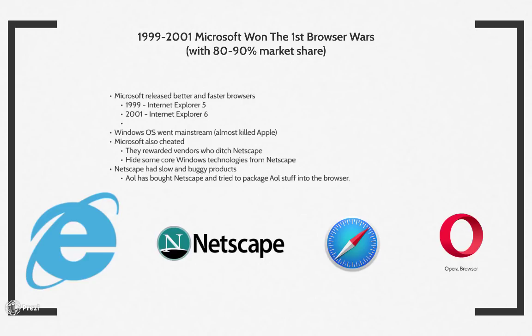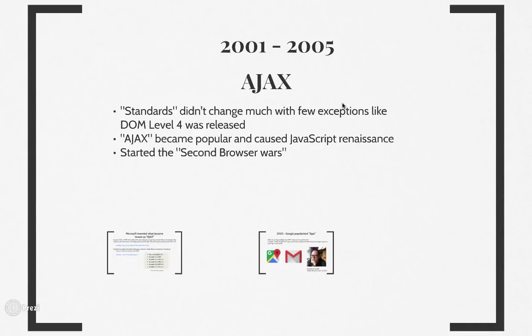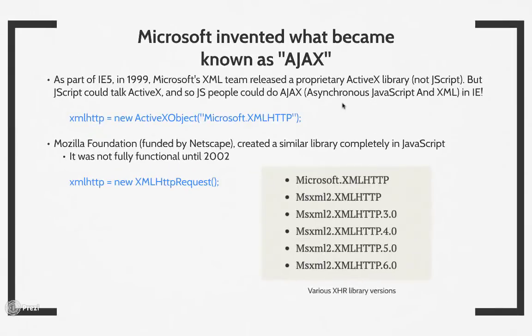That brings us to the 2001 to 2005 time frame. Standards didn't change much except for DOM. But the biggest surprise was AJAX — Asynchronous JavaScript and XML — which became very popular and caused a JavaScript renaissance, also starting the second browser wars. Surprisingly, it was actually Microsoft that created what became known as AJAX, back in 1999. Microsoft had a team dealing with XML, and they invented a way to send XML documents asynchronously between the server and the browser.